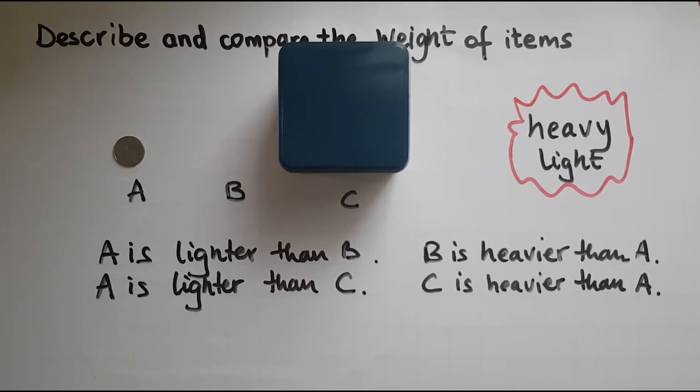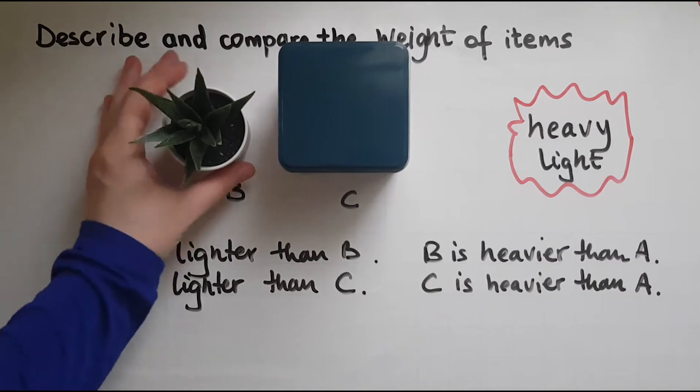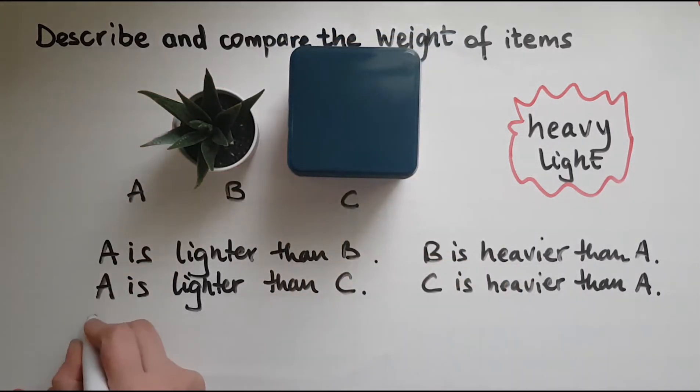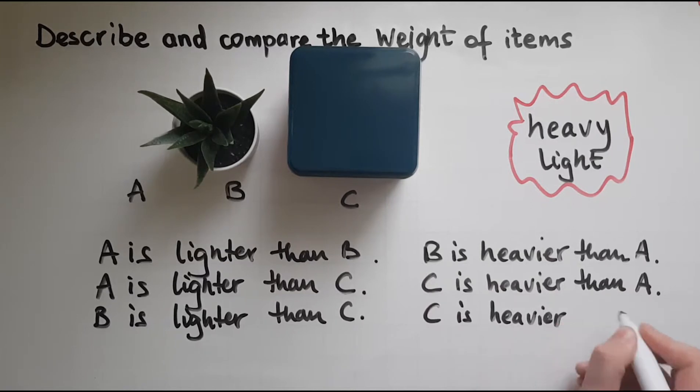And if I compare B with C, B is lighter than C and C is heavier than B. So when I compare the two items with each other, I use lighter or heavier.